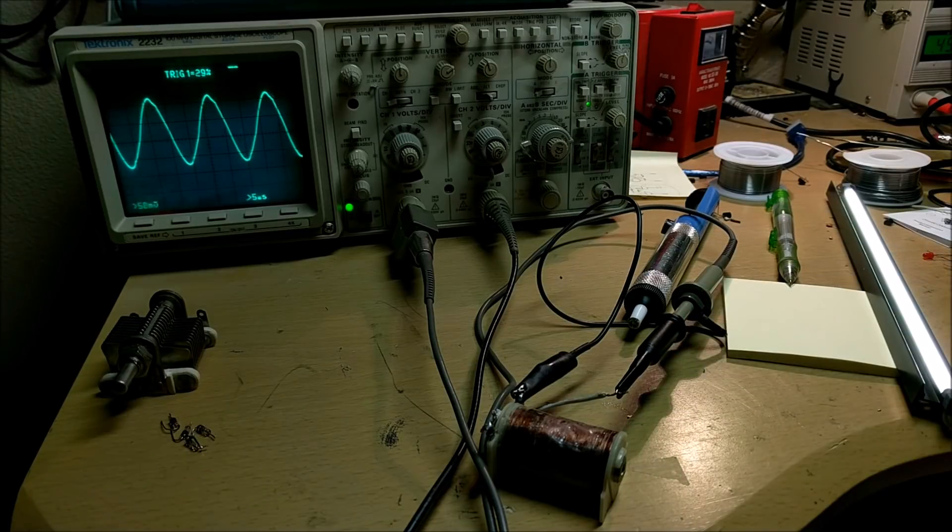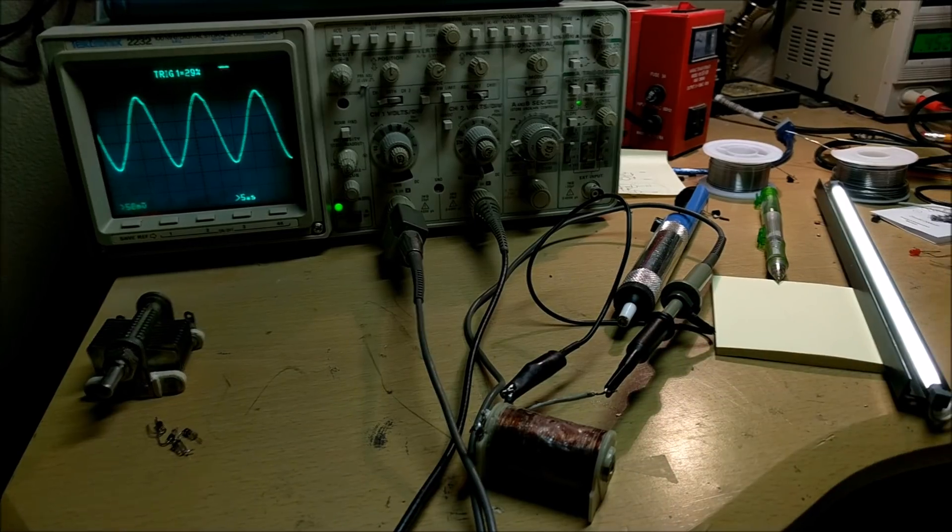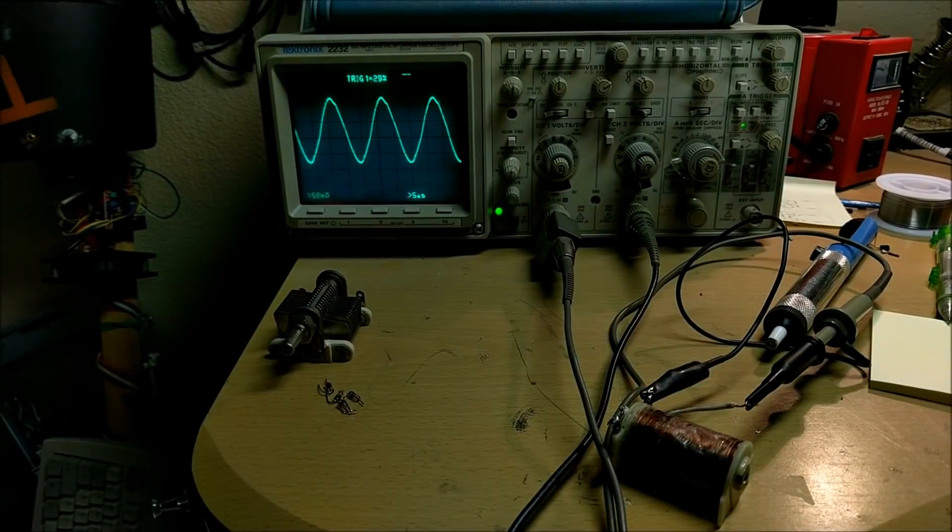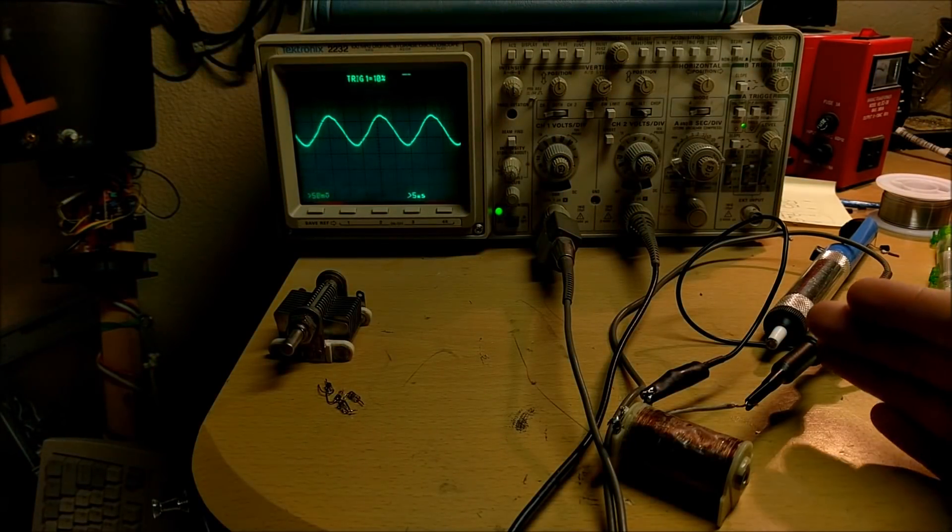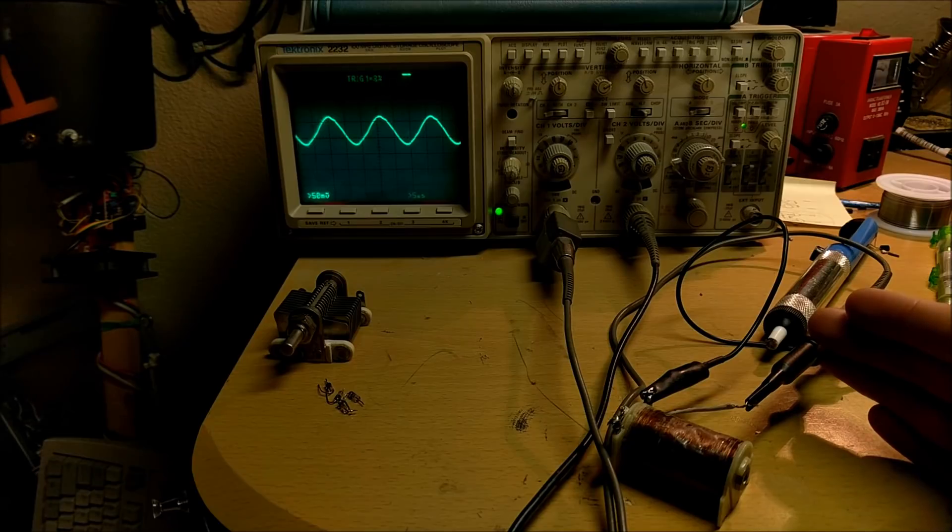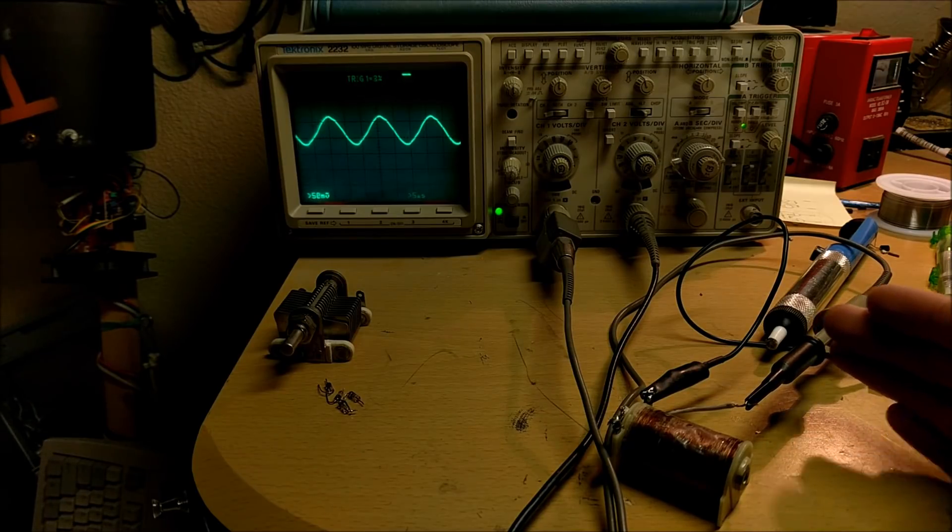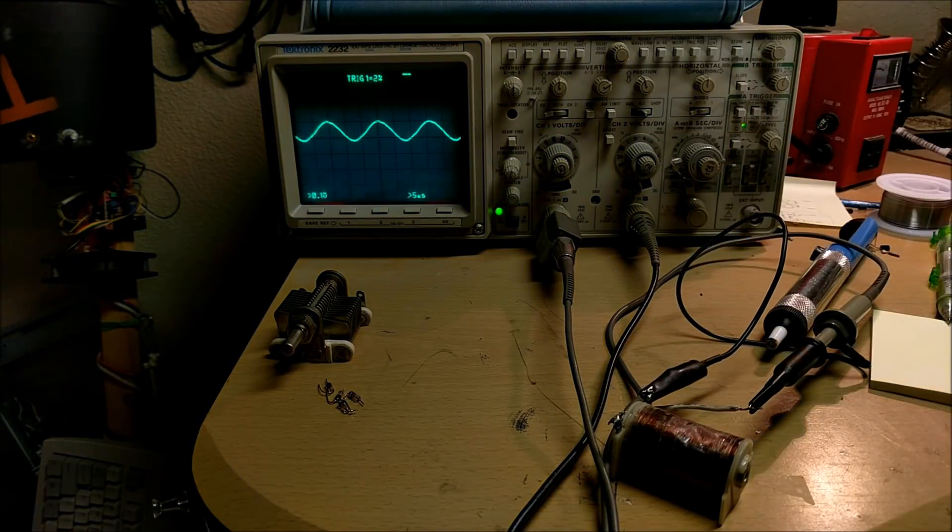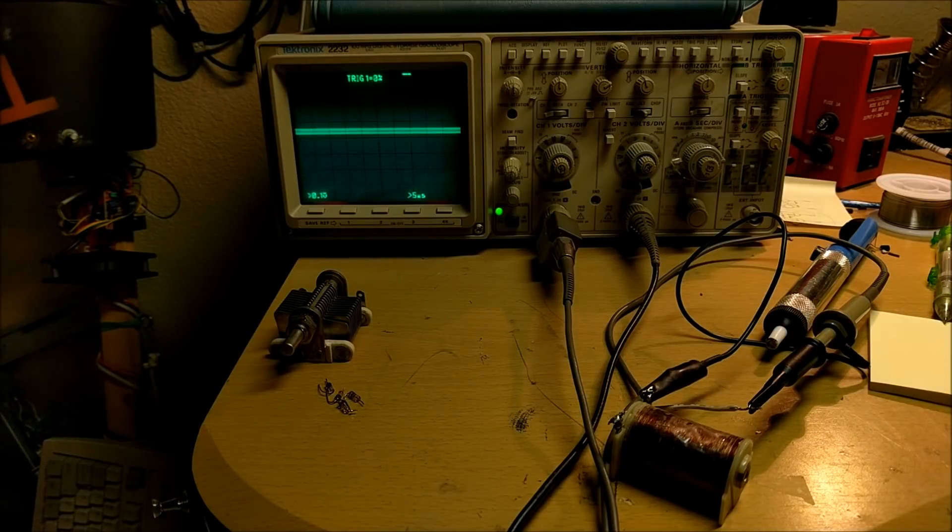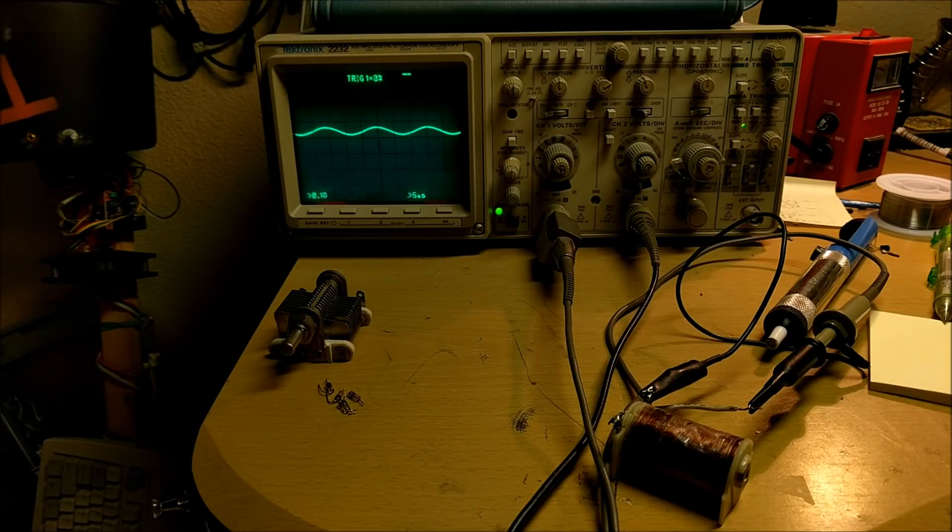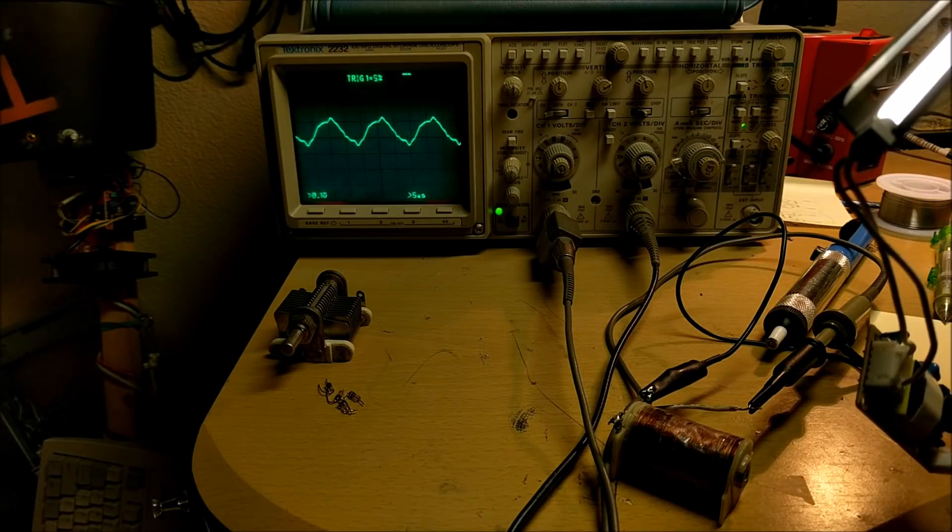If there's no hand between the coil and circuit, the waveform is relatively large. If I put my hand in between, it absorbs some of the magnetic field and decreases the amplitude. Distance also makes a large difference—if I move the fluorescent tube farther away, the amplitude gets smaller. Closer, and it gets larger.